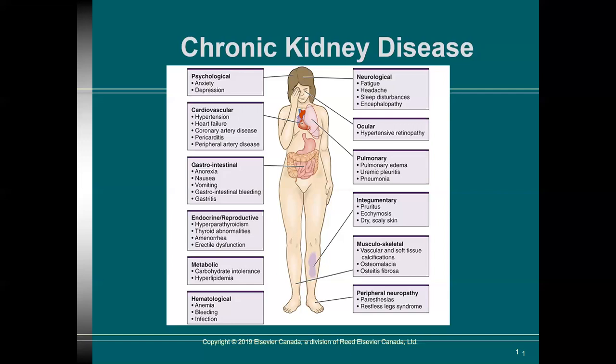From a hematological perspective, we see an impact on the clotting cascade that the kidneys are involved in and on red blood cell formation, so we see anemia, various types of bleeding, and also because of the white cell component, patients are prone to infection. From a metabolic perspective, we often see very high levels of lipids and an inability to manage carbohydrates particularly well. From an endocrine or reproductive perspective, we can see things like erectile dysfunction. For women, amenorrhea or loss of their period. The thyroid often has abnormalities, and hyperparathyroidism — recall that the change in calcium level causes the parathyroid glands to become really revved up and are actually causing further harm.